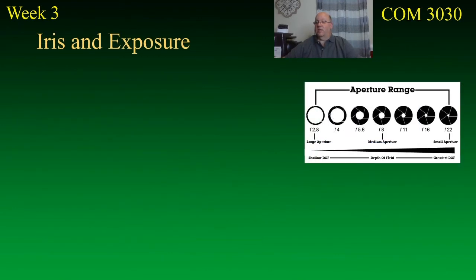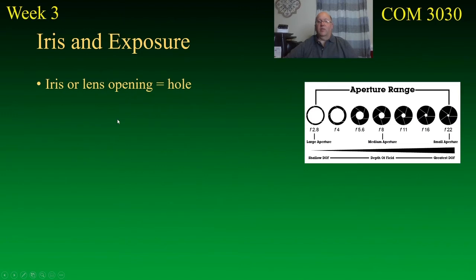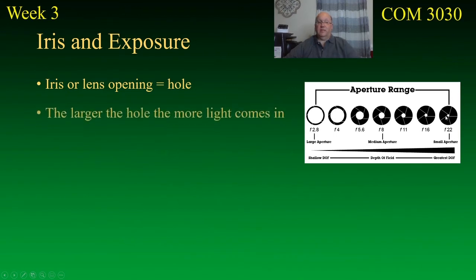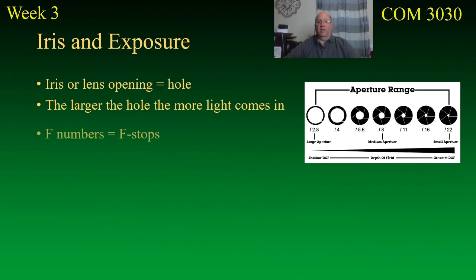Now let's talk about iris and exposure. An iris, or lens opening, is literally a hole in the lens — not a hole in the actual glass, but an opening within the camera that allows light to enter. If you've got a large hole it's letting in more light than a small hole. Obviously, the larger the hole, the more light comes in.